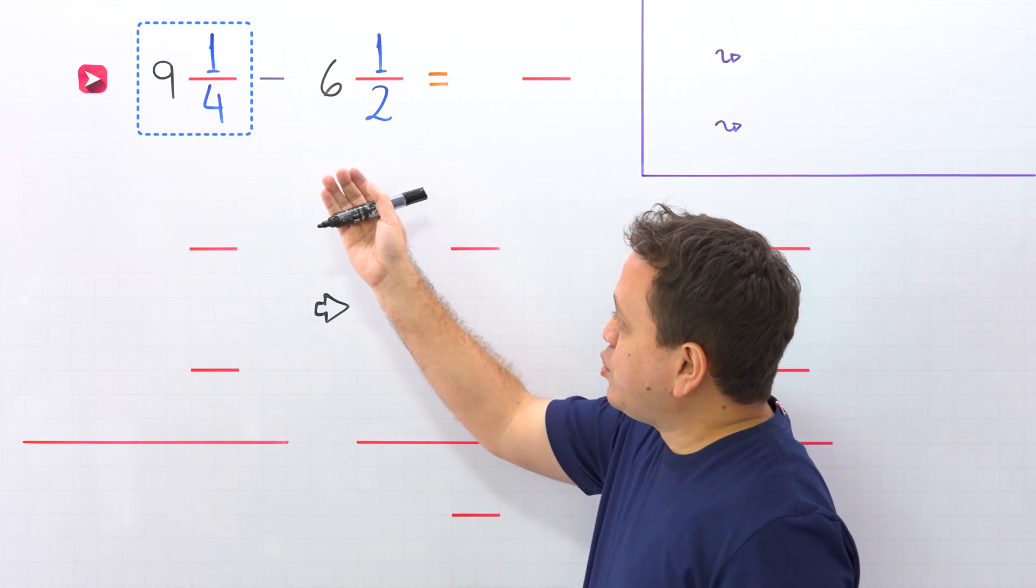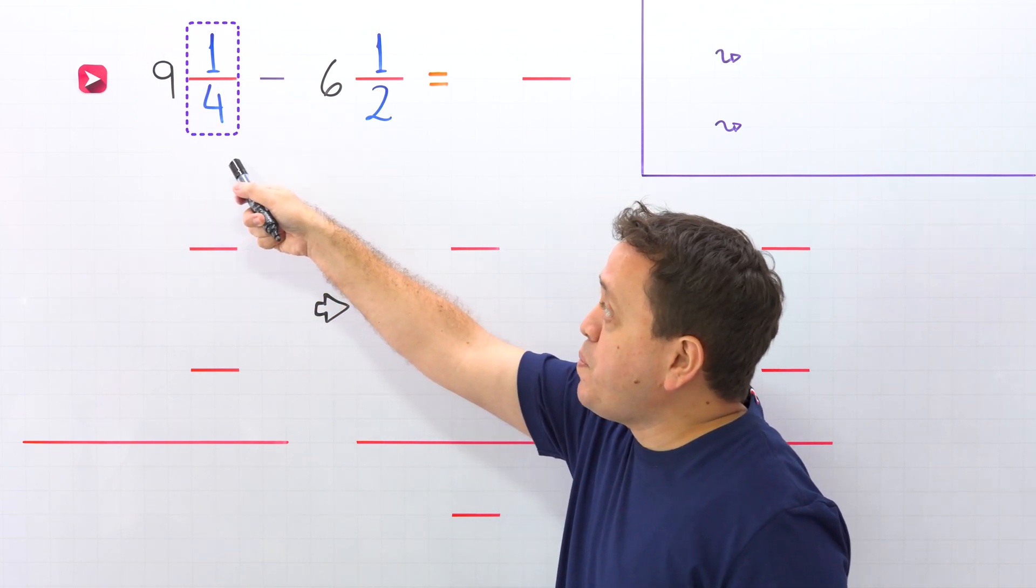Let's start with a quick review. A mixed number, like this one, is the sum of a whole number and a proper fraction.